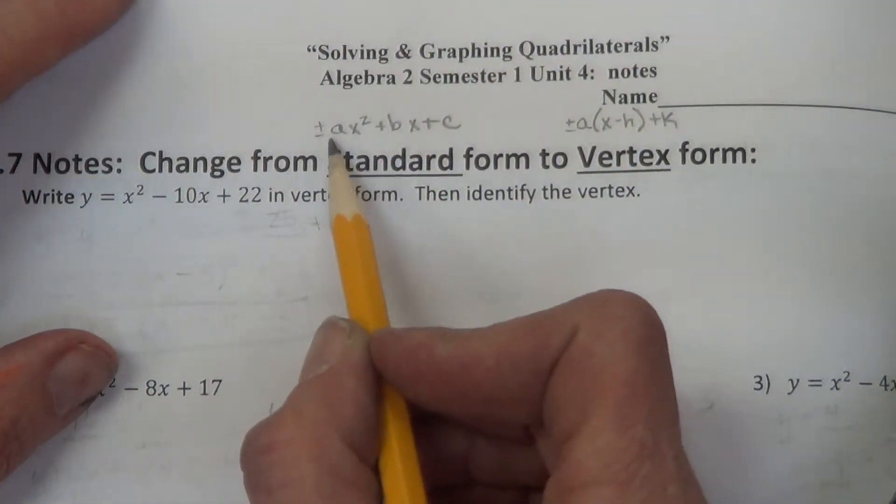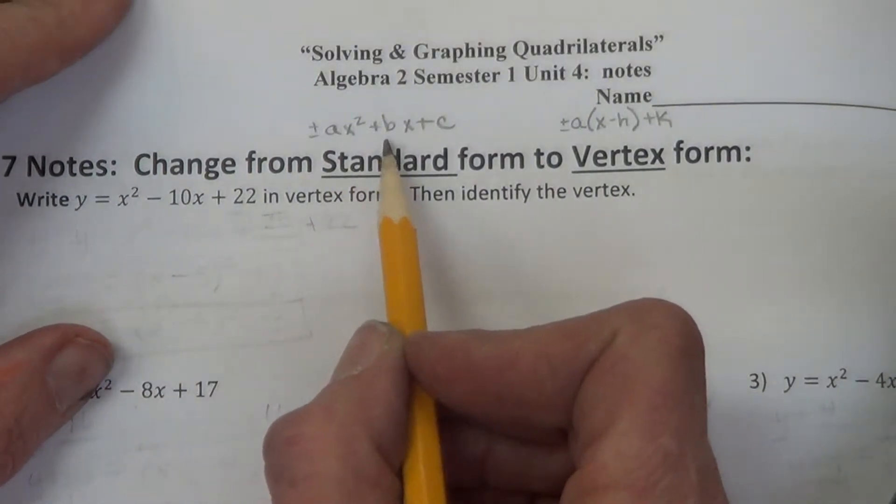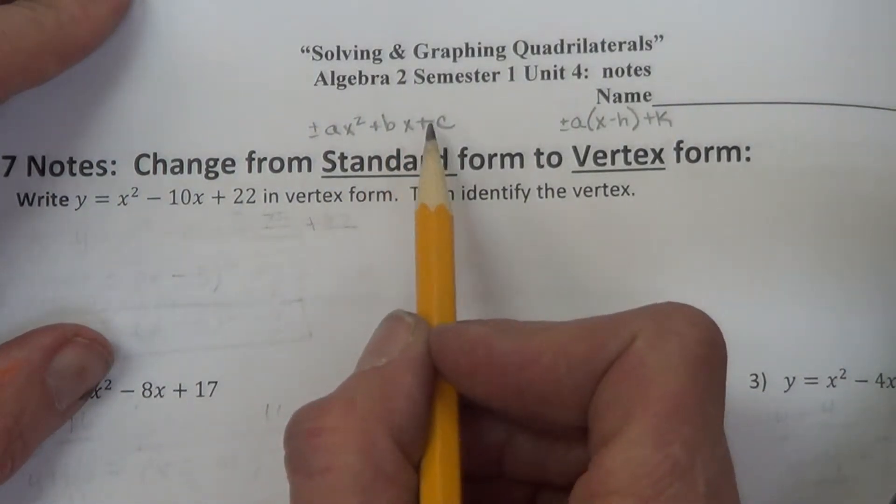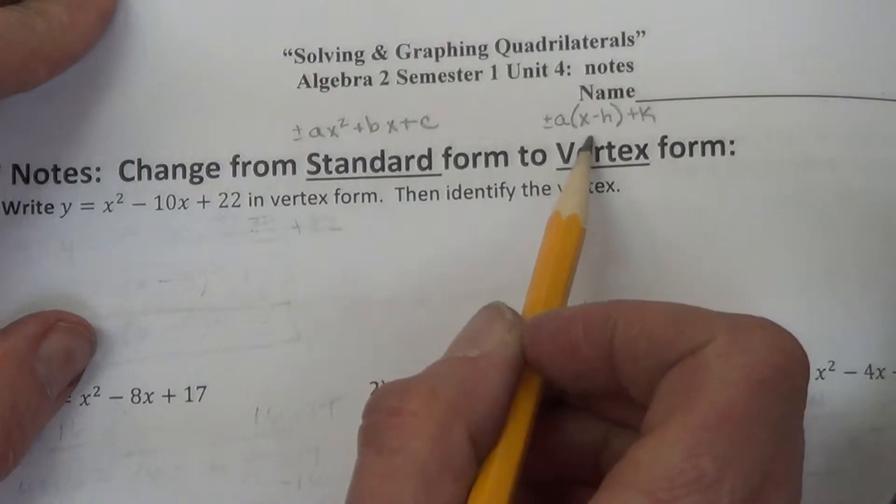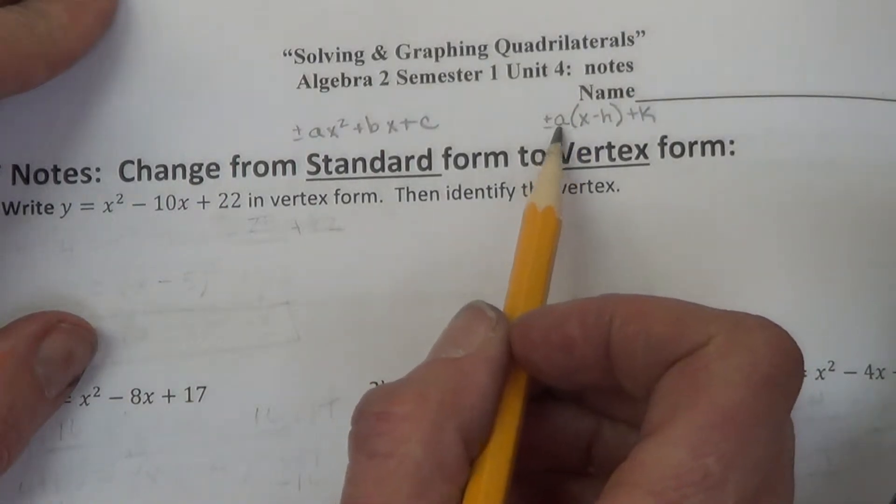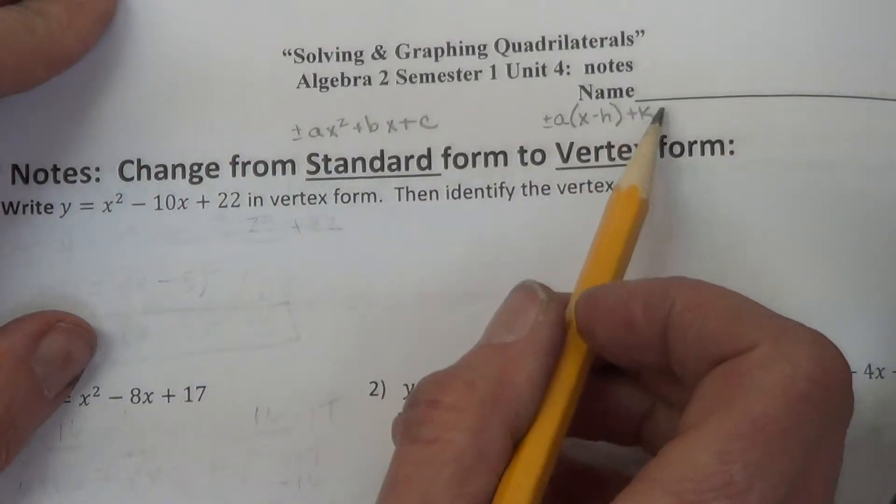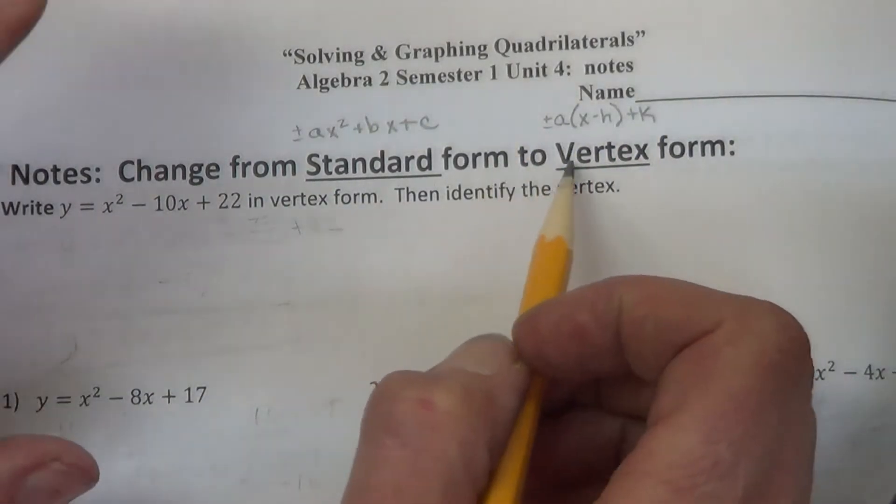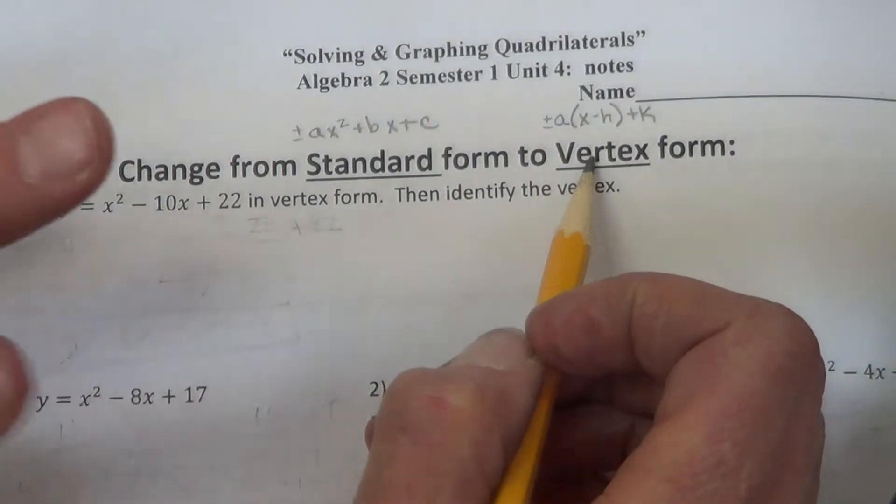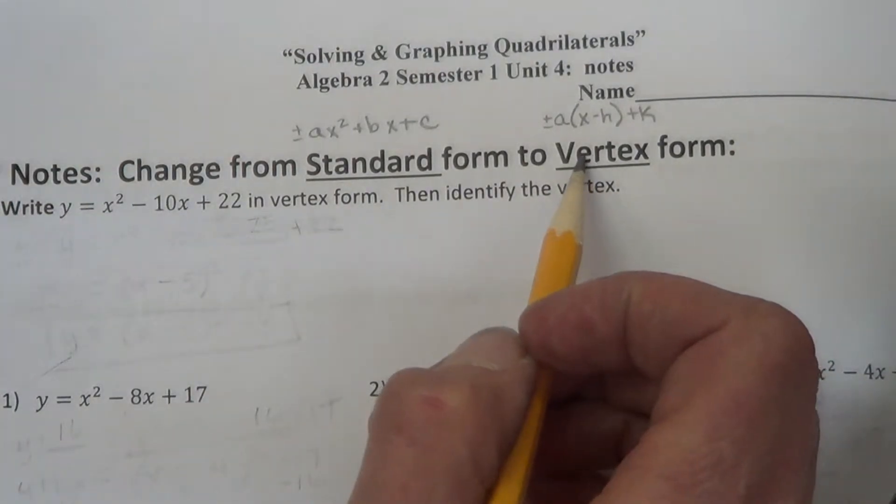Okay, change from standard form. Standard form is ax squared plus bx plus c. Vertex form is a times x minus h squared plus k. I've taught you how to convert from vertex and intercept to standard. This is our last lesson. We're just converting from standard to vertex.